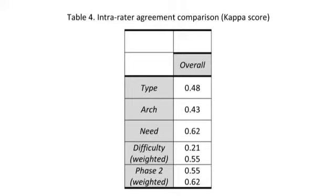The Kappa score was 0.48 for the raters determining the type of malocclusion detected, 0.43 for the raters determining which arch was at fault, and 0.55 for the raters determining whether or not phase two treatment was necessary. When determining the need for immediate treatment, the investigators had substantial agreement within themselves with an overall value of 0.62 among the raters.